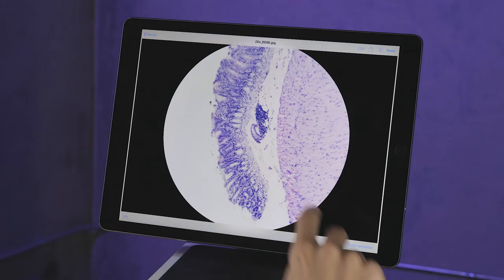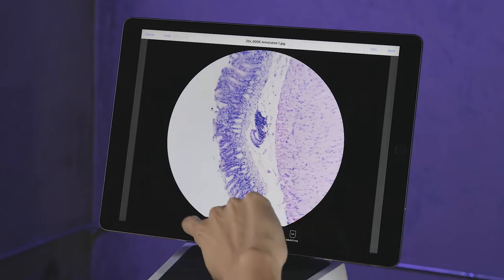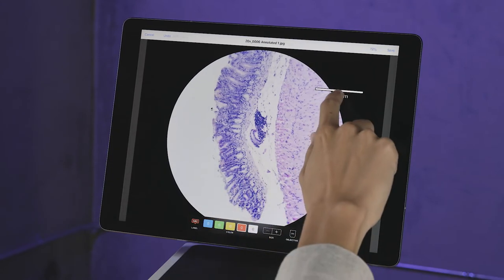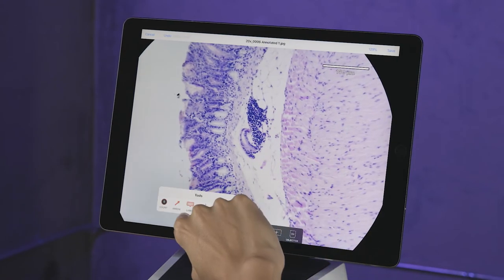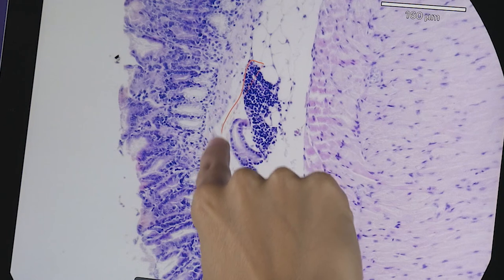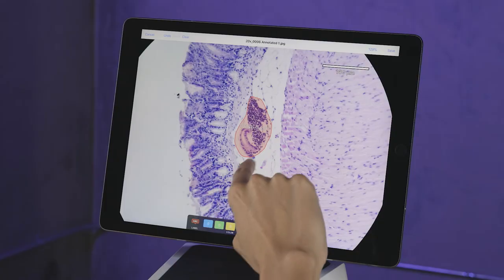Once you've captured your image, we can quickly review them and make annotations. Place the scale bar anywhere you would like, and we can easily take measurements, as well as label our findings.